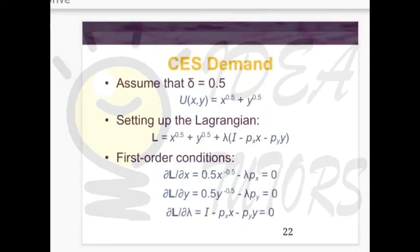The procedure for setting up a Lagrange with any utility function is the same. In general: take the utility function from your question, put a plus sign, write lambda times I minus px*x minus py*y in brackets. Take partial derivatives of this Lagrange equation with respect to x, then y, then lambda. Solve the first two equations to find some value for px*x or py*y, and substitute into the third equation.